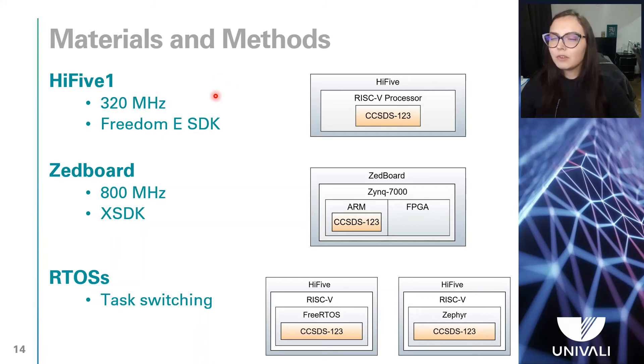For the experiments, the HiFive1 was configured to run at 320 MHz and we used the Freedom E310 software development kit, which comprises SiFive Freedom Metal library that enables the bare metal programming.